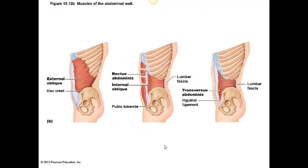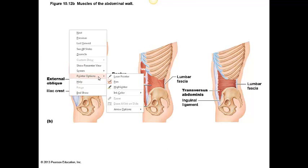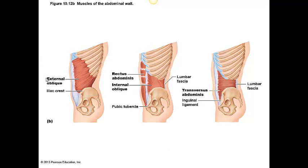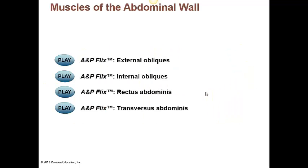This slide from your textbook shows the external obliques (the more superficial ones), the rectus abdominis (the most medial), the internal obliques, and the transverse abdominis. These are the main abdominal muscles that you need to know. Make sure that you watch the A&P Flix videos on the external obliques, internal obliques, rectus abdominis, and transverse abdominis.